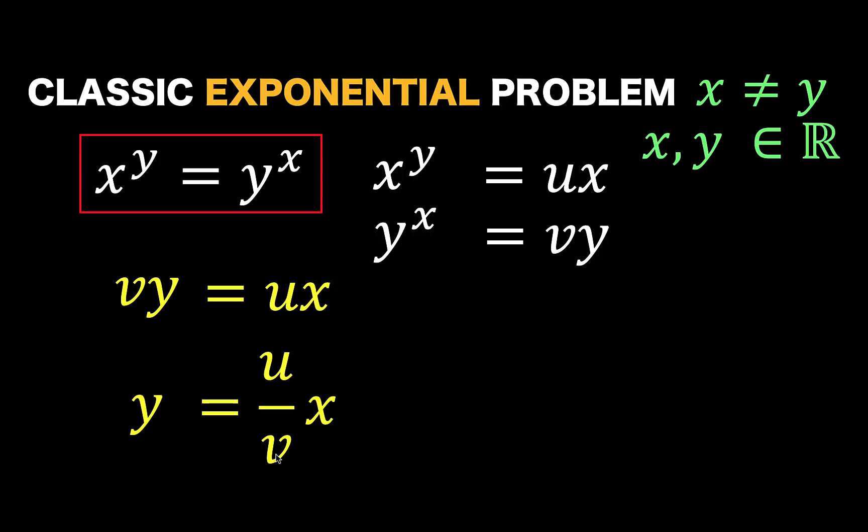Since this u over v is just another constant, let's rewrite that as y equals m times x, where m is u over v. This now indicates that y is just a multiple of x.